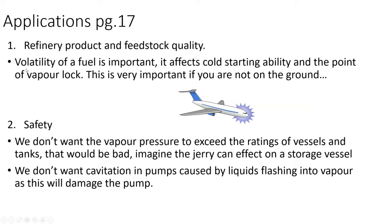Applications for vapor pressure: first is refinery product and feedstock quality. Volatility of a fuel is very important — it affects cold-starting ability and vapor lock. If we bought gasoline and it didn't ignite when we turned the key, we'd be very upset. The second major application is safety — we don't want vapor pressure to exceed the ratings of pressure vessels and tanks, and we don't want cavitation in pumps caused by liquids flashing into vapor. Knowing the vapor pressure of our fluids allows us to operate the process safely.